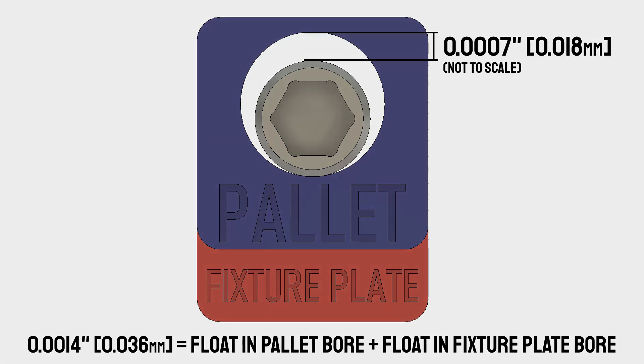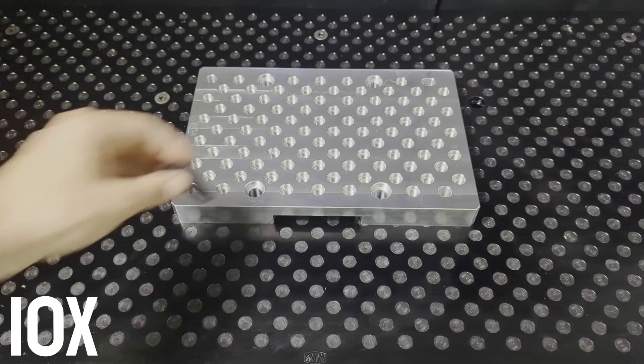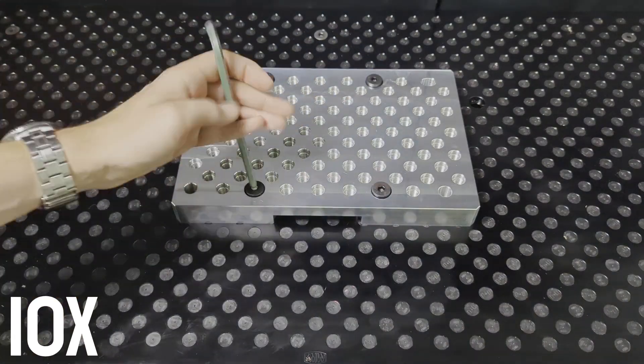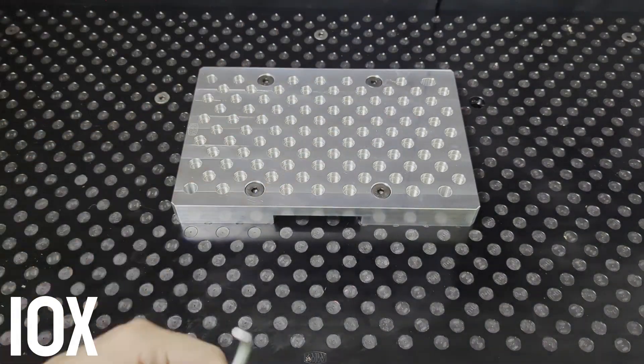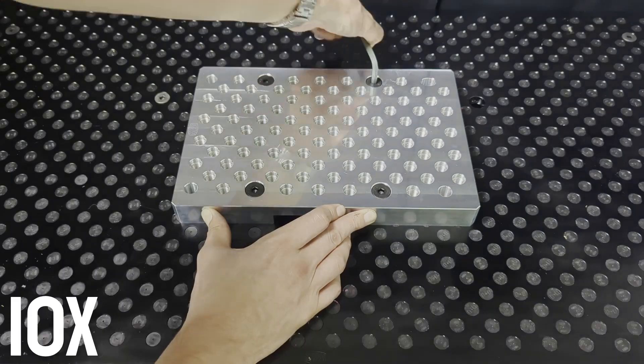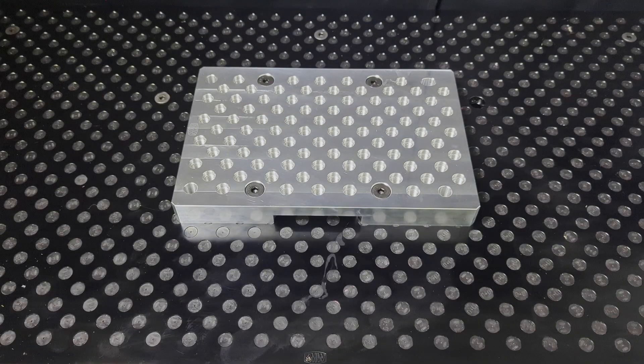There are a few considerations that can improve that repeatability. The first is that pushing your fixture consistently in one direction when tightening your part down will help improve repeatability as it always pushes the pin against the same side of the locating bores, effectively cutting any float in half.